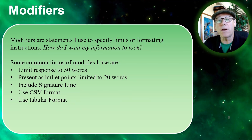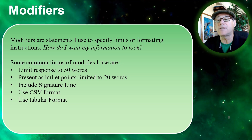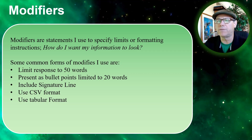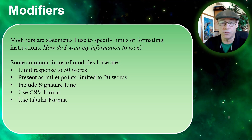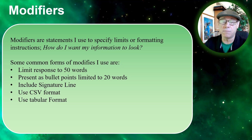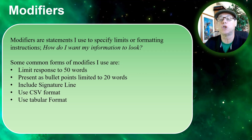Now the next part is what I call the modifiers. In this element we're going to use statements that specify how I want the output to look. For example, ones I use a lot: limit response to 50 words; present as bullet points; limit to 20 words — I use that one a lot; include signature lines, if I'm writing my student use contract that's something you could add; use a CSV format; use tabular format. This is how you want the output to look.